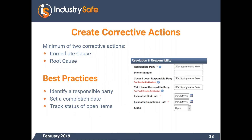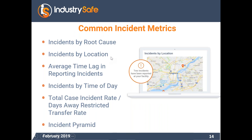Another key piece of incident investigation is not only finding the root cause but making sure you have corrective actions to prevent the incident from happening again. A corrective action could be training individuals — for example, if someone hurt their back, training on safe lifting techniques. A corrective action itself can be quite simple: what the action is, who's responsible, when it should be complete, and the status of completion.